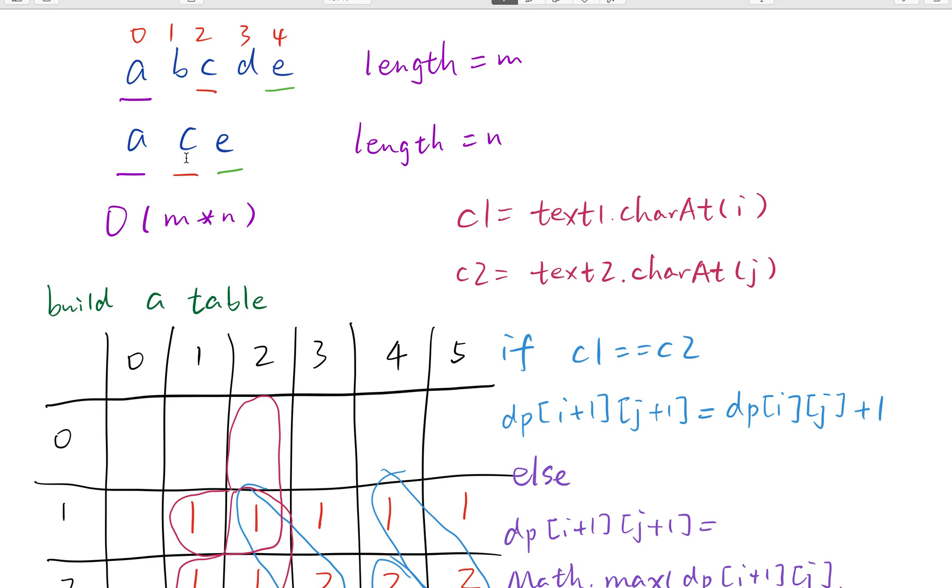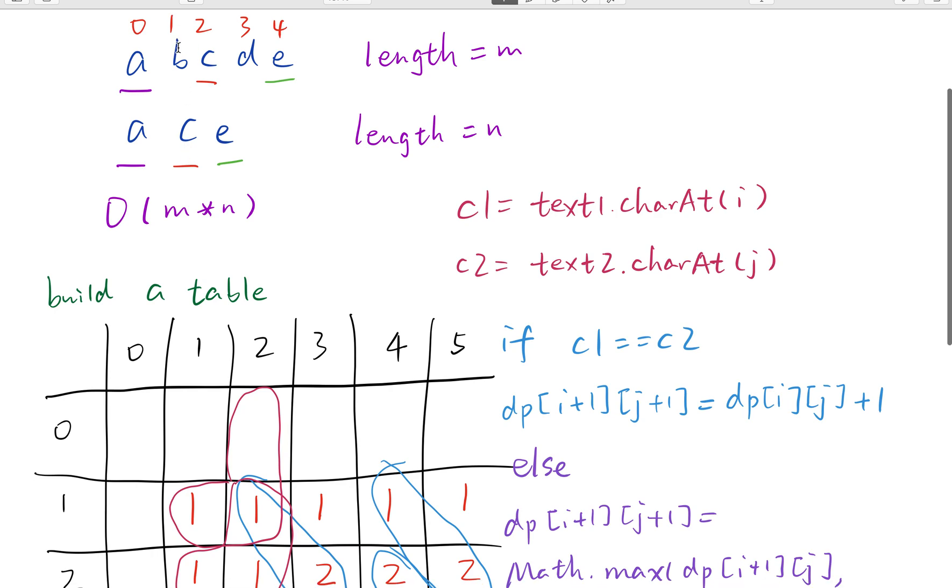How do we get 2? Actually we will move these two indices backward. How about the longest common sequence between ab and a? It should be 1. So currently we will add one more. So it should be 2.